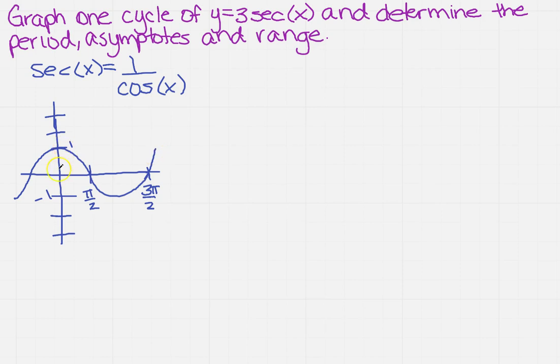I've also labeled the points of interest. It starts at 1 and goes to negative 1. I've labeled pi over 2 and 3 pi over 2 because that's where it crosses the x-axis. So there's our starting point.